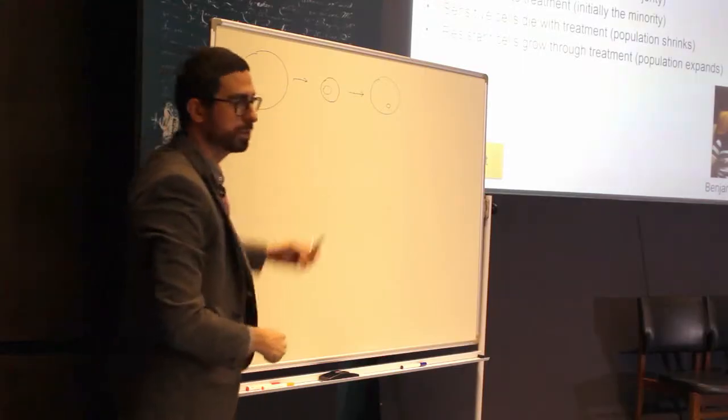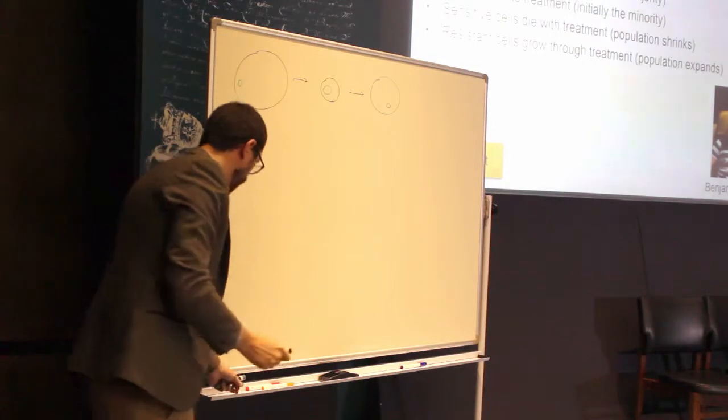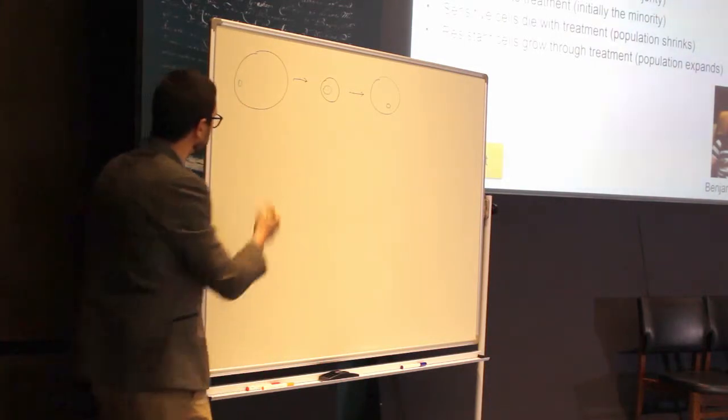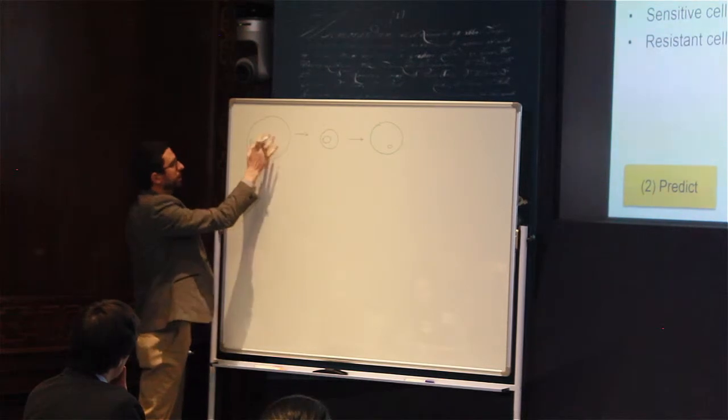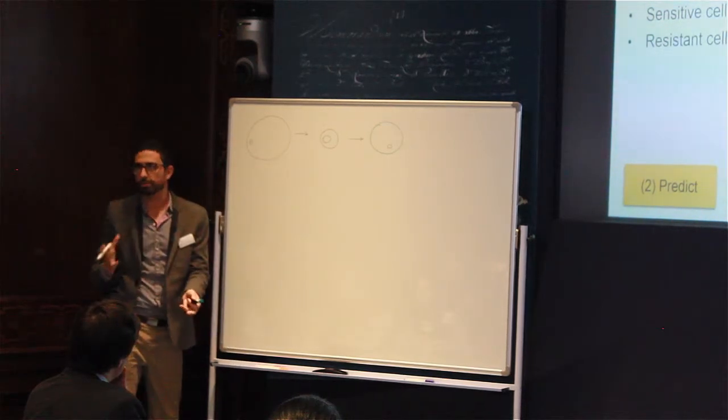Now, how do we model this process? I'll try to make it in very simple terms here. Well, we write an equation. So we ask the question, how does the tumor change over time?